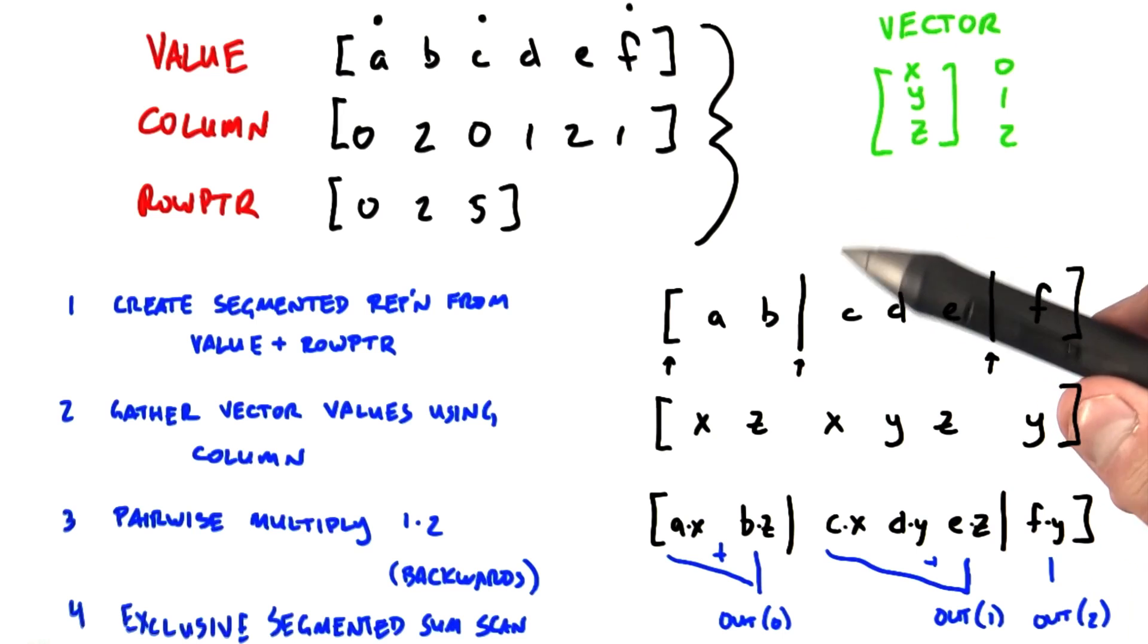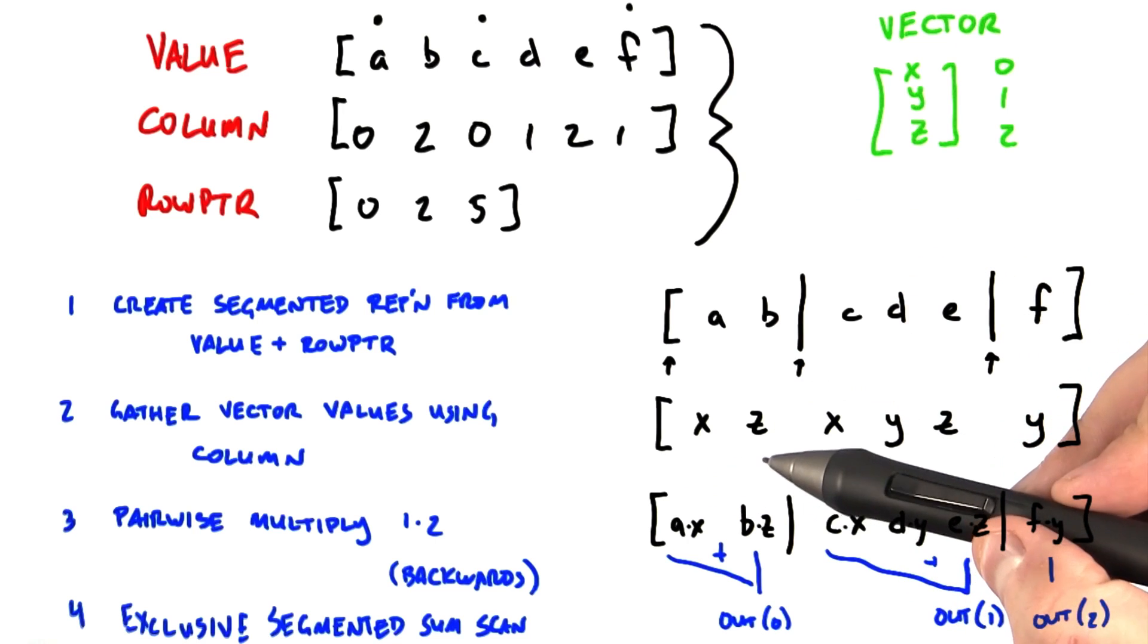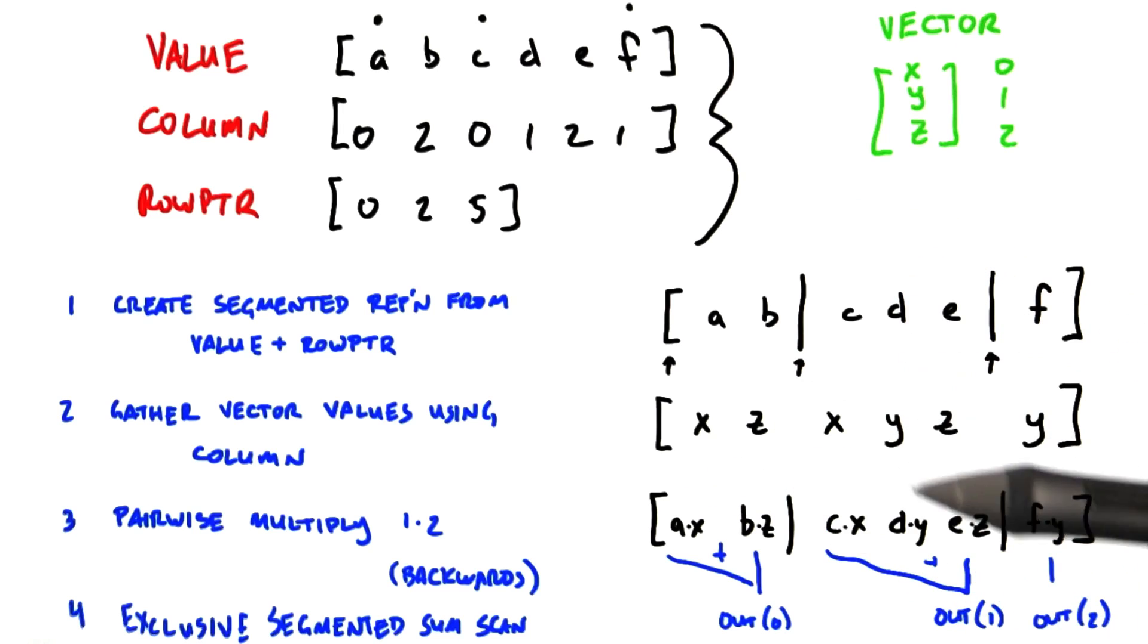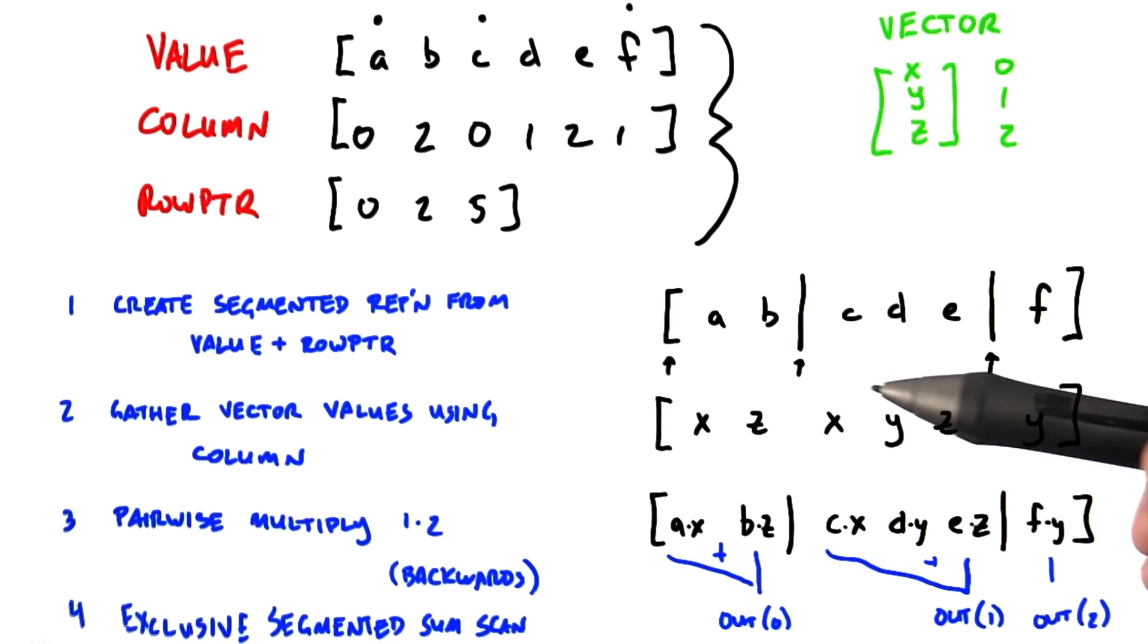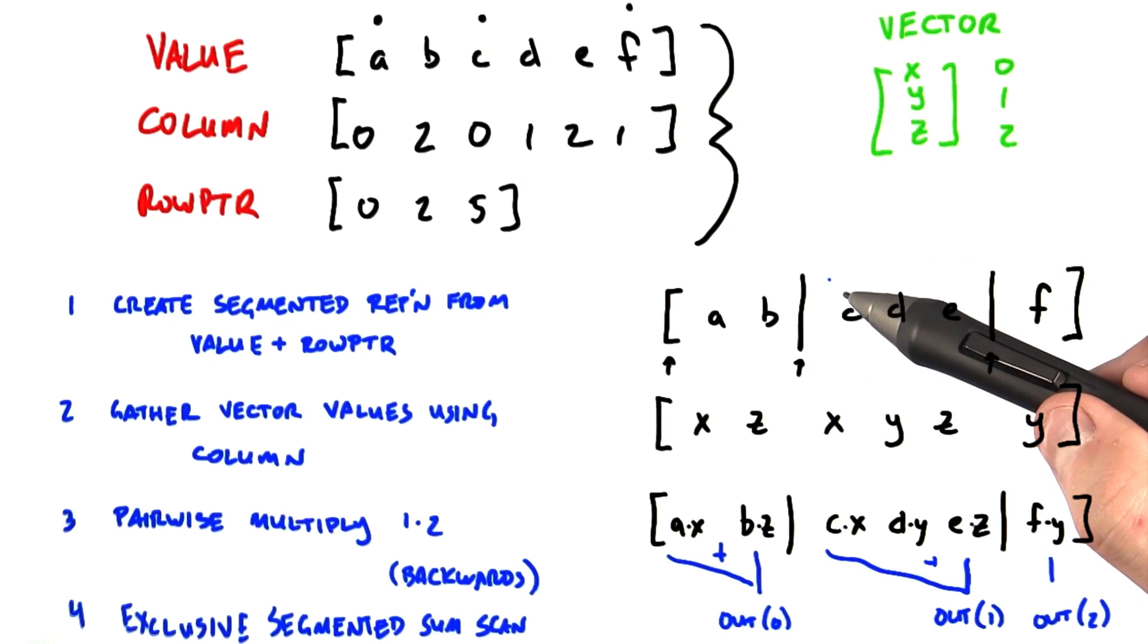But now we have to add up the partial products on each row to get the output vector. Specifically, we need to add the partial products within each segment. And that's where our segmented scan comes in.